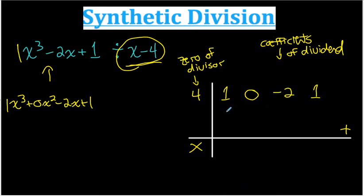And here's how it works. You start by bringing down the first term in the dividend and write it here, 1. Then we do the 0 multiplied by that answer in our quotient. So 4 times 1 is 4.